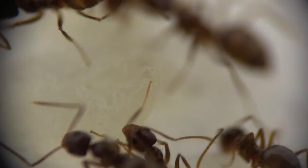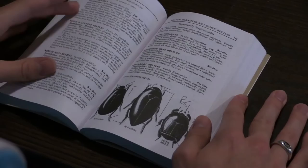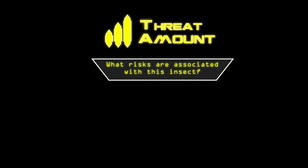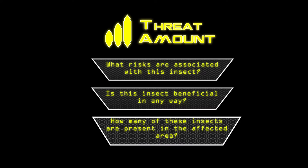To determine the threat amount, you will need to do some research about the specific insect you are dealing with. You can use the tools presented in the previous video in this series. The questions you will ask are: what risks are associated with this insect? Is this insect beneficial in any way? How many of these insects are present in the area you are trying to control? Answers to these questions will help you determine if controlling the insect is worth it.